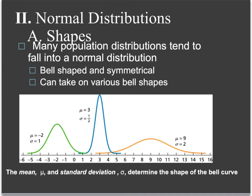The best-known density curve we talk about in statistics is the normal distribution. The shape of the normal distribution is bell-shaped and symmetrical, but there are different variations of bell-shaped. The green curve is a normal curve. The blue curve is a normal curve — it's much skinnier and taller. And the orange curve is also a normal curve — it's kind of flat and wide. Those are all different bell-shaped normal curves.